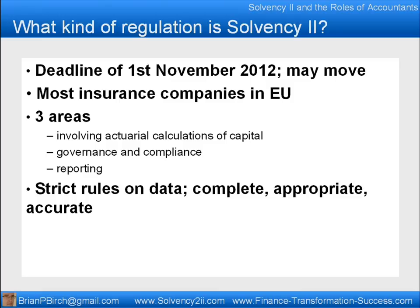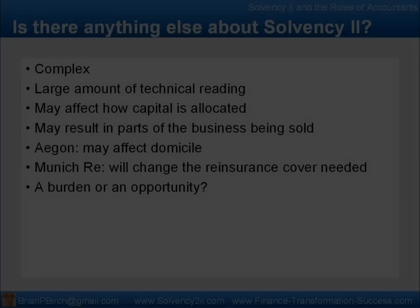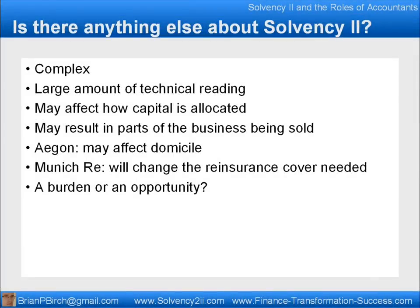There are also strict rules on data — it has to be complete, appropriate, and accurate. Is there anything else about Solvency II? It's complicated. There are a lot of consultation papers, and some of them are quite lengthy. It can affect how capital is allocated in the business, and therefore it may affect what kind of business one has.